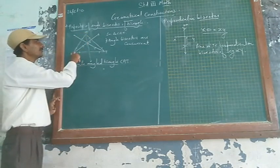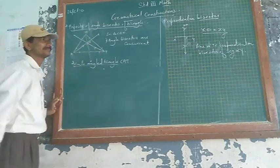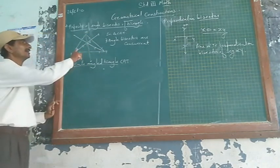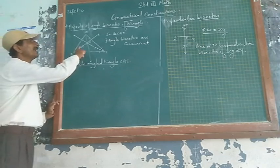In this way, follow the same method for all 3 angles. Therefore, you will get 3 angle bisectors.